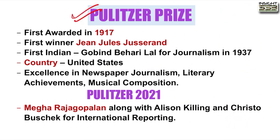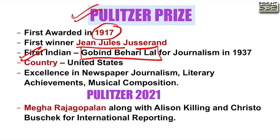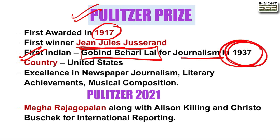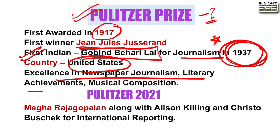Pulitzer Prize was first given in 1917; the first winner was Gene Jules. The first Indian to receive it was Gobind Behari Lal, for journalism in 1937 — this 'first who is who' is very important. The Pulitzer Prize is given by the United States for achievements in newspaper journalism, literary achievement, or musical composition.